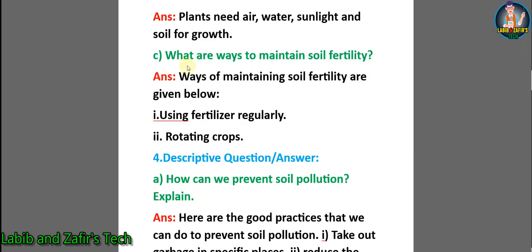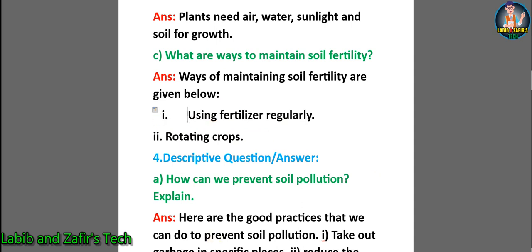Number C: what are ways to maintain soil fertility? Answer: ways of maintaining soil fertility are — 1. using fertilizer regularly, 2. rotating crops.